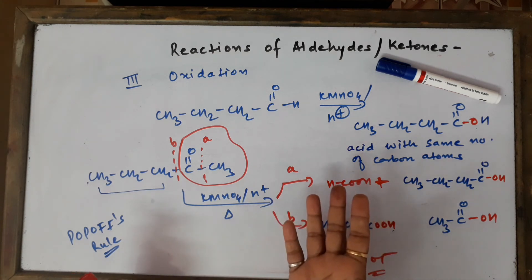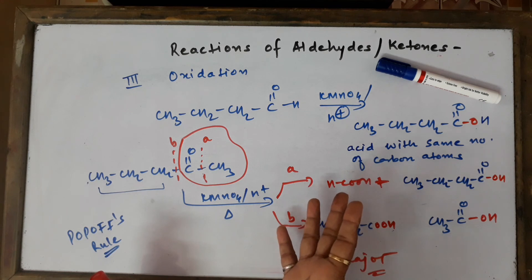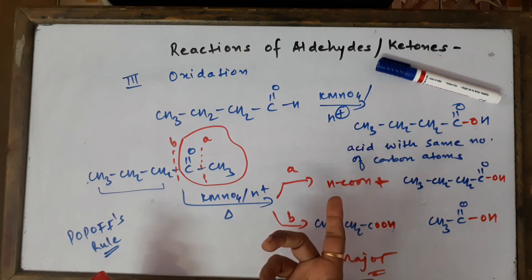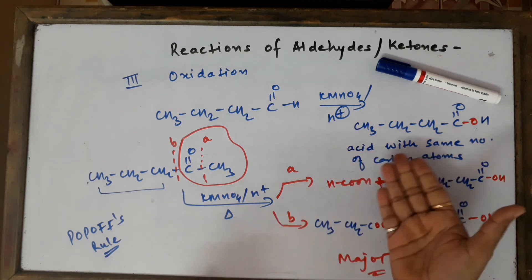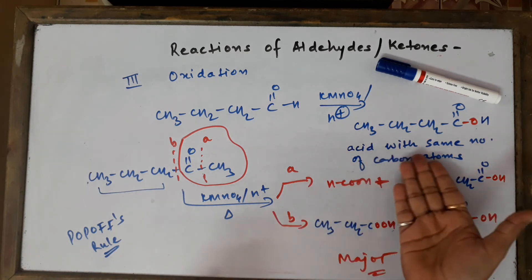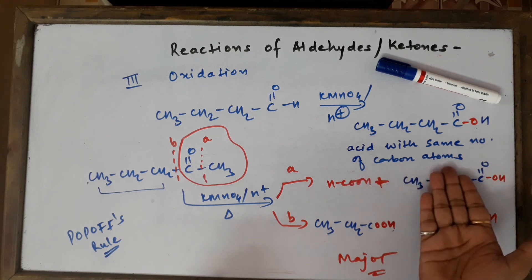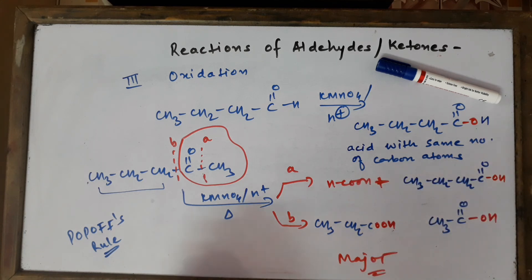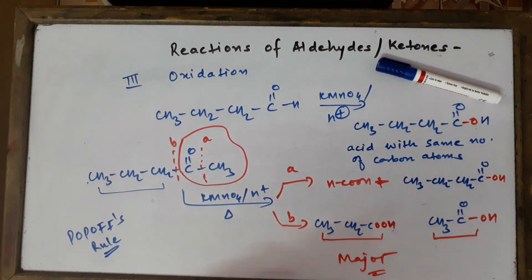The key difficulties in ketone oxidation are: first, strong C–C bonds must be broken, requiring vigorous conditions; and second, unlike aldehydes where the product has the same number of carbon atoms as the parent compound, in ketone oxidation the products have fewer carbon atoms than the parent compound.